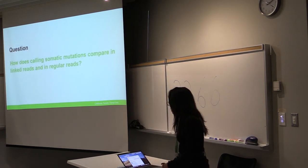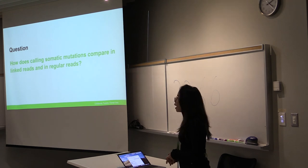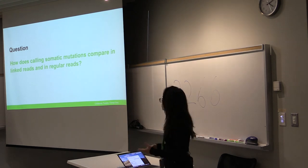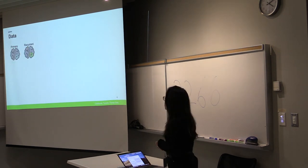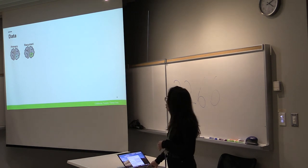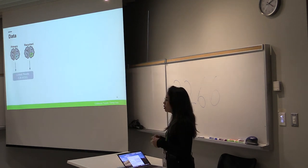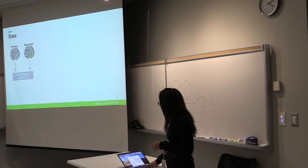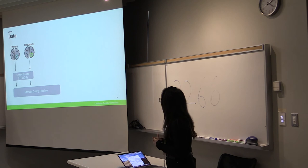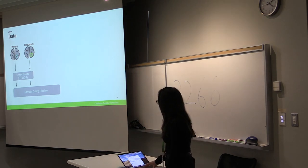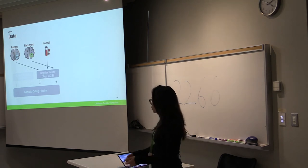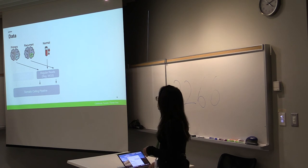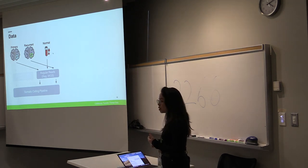And so the next few slides I'll be trying to understand the question about how calling somatic mutations differs in linked reads and in regular reads. In order to carry out this analysis, we obtained some linked read whole genome sequencing on a primary tumor and a recurrent tumor from a glioblastoma sample. From there we imposed a somatic calling pipeline and we also took from that exact same sample our regular reads and also imposed it under the same somatic calling pipeline. We additionally had this regular sequenced normal sample, which enables the tumor normal mode and the tumor-only mode comparison.